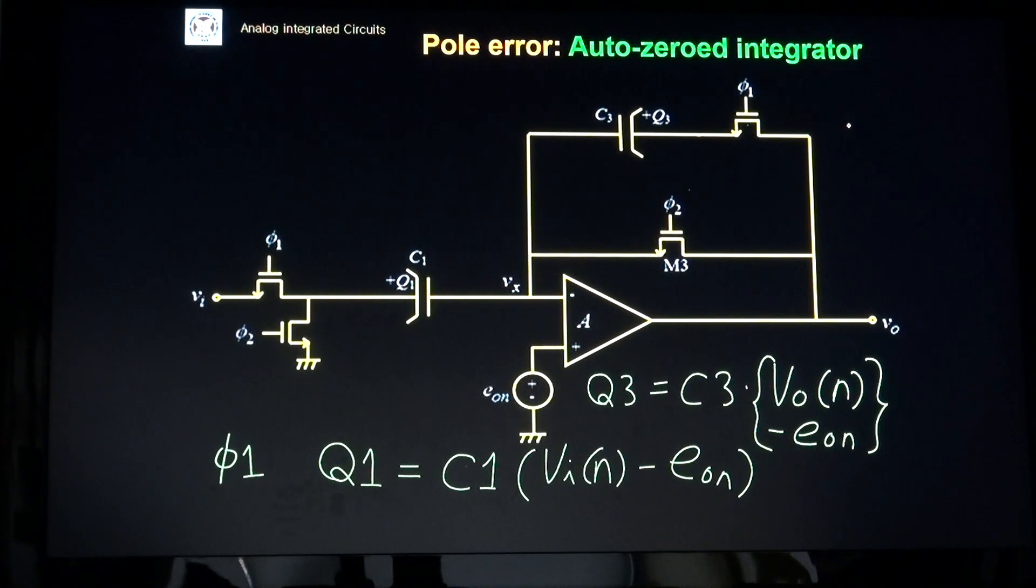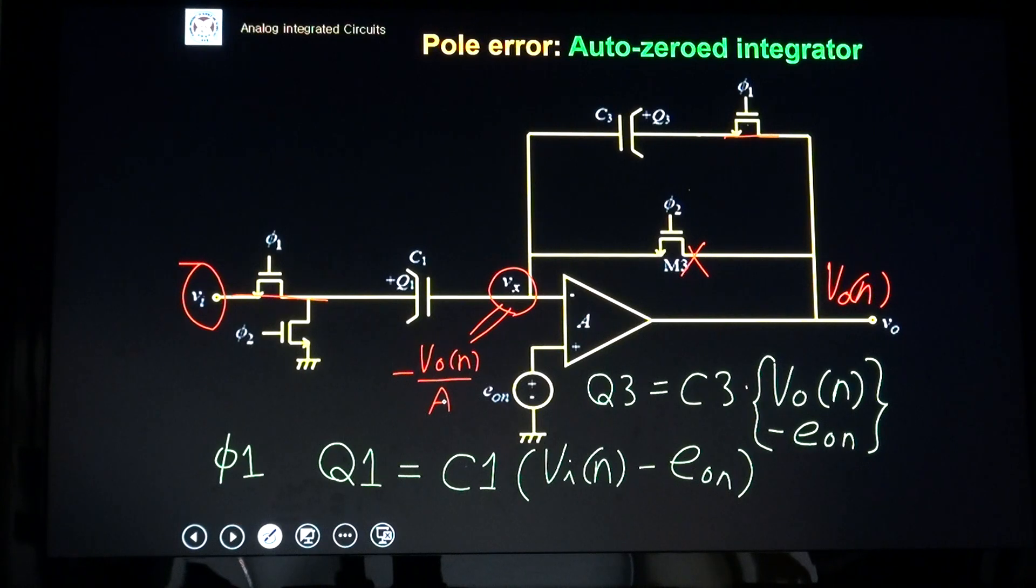How about what happens during φ1? During φ1 phase, this switch C1 samples input voltage Vi, and this feedback switch is on, this M3 switch is off. Because of feedback through C2, this Vx is VON. This Vx node voltage is just VON divided by A. Then what's Q1? Q1 is C1 times Vi minus EON.